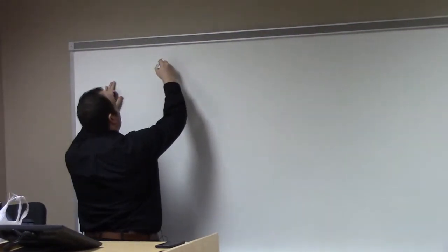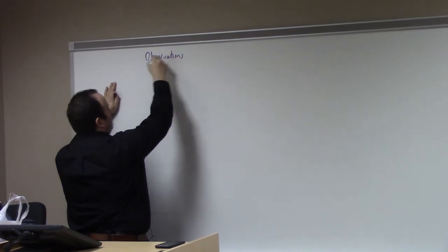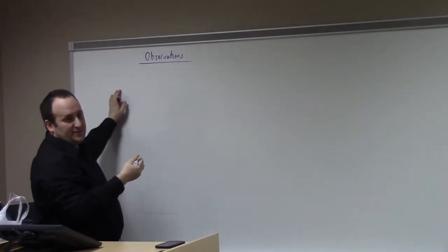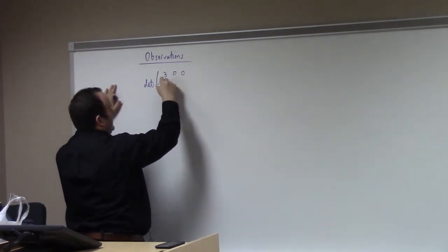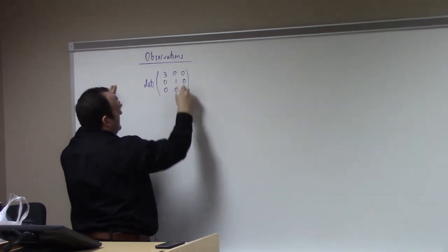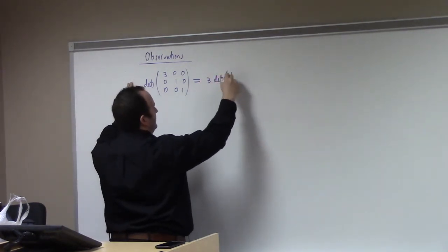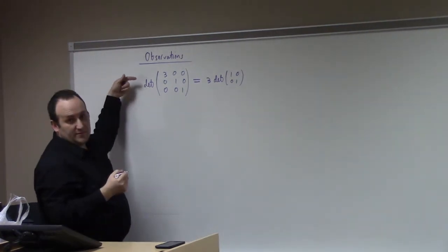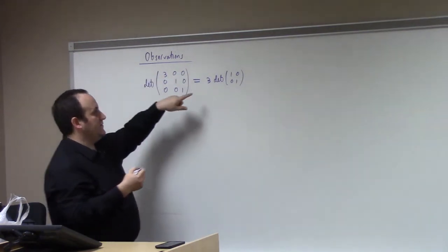So I promised you guys an example. Let me get to it. Rather than doing general proofs, let me just give you a couple of three-by-three observations. For example, if I do the determinant of the matrix with 3, 0, 0 on the diagonal and 1s elsewhere, that's nothing more than 3 times the determinant of the 2x2 identity. Expanding across the top row, you get zero for the other two terms, so this is really just 3.